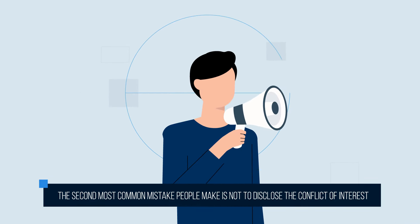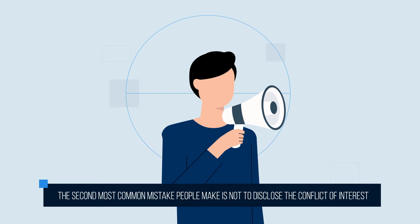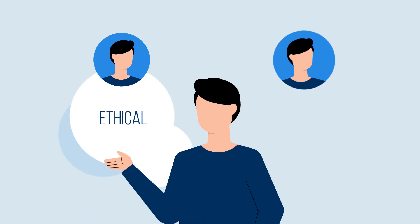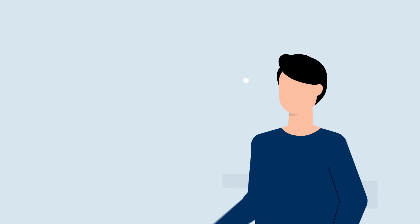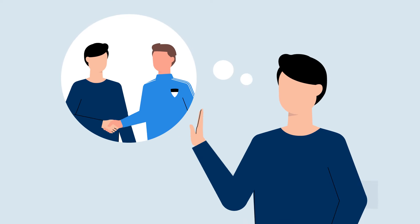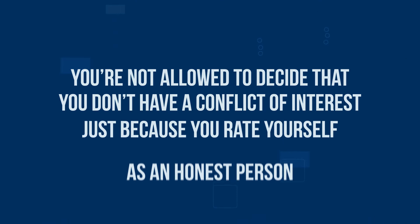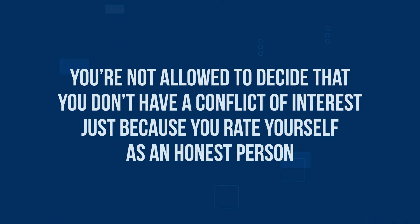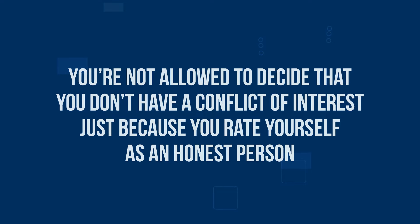The second most common mistake people make is not to disclose the conflict of interest. Because we see ourselves as ethical, honourable people, it can be challenging to imagine ourselves ever doing the wrong thing. Putting it another way, you're not allowed to decide that you don't have a conflict of interest just because you rate yourself as an honest person.